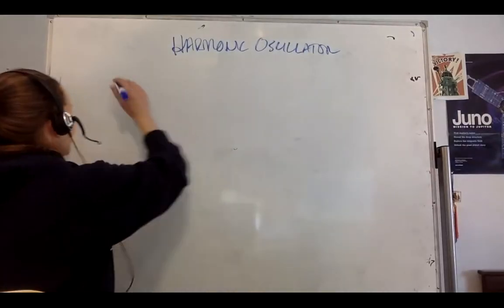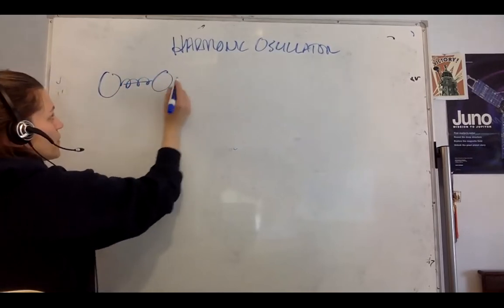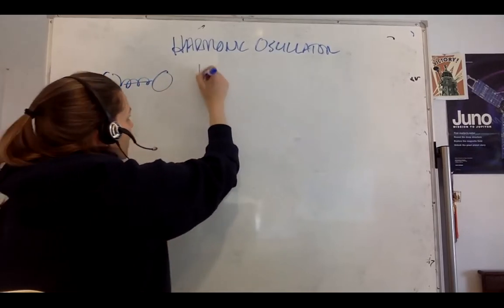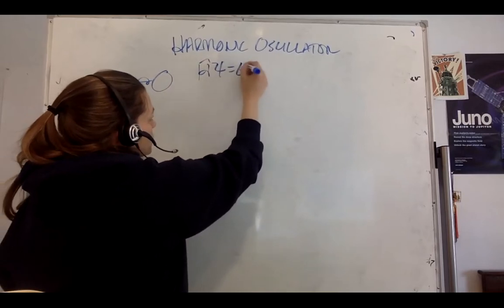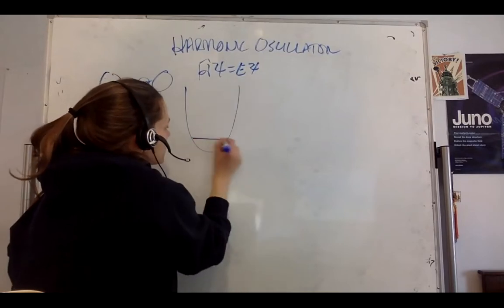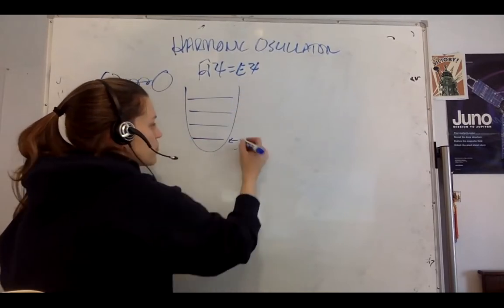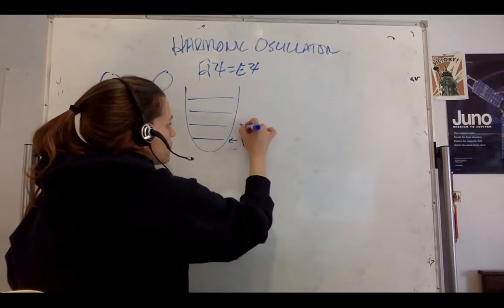We've talked about the harmonic oscillator where we've got two masses on a spring. We have H·ψ = E·ψ, where H takes into account the potential energy between them and we get something that looks like this, where these are my different quantized vibrational states: v equals zero, v equals one.